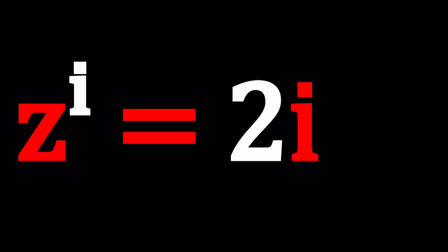So we have Z to the I equals 2I. How do we solve for Z? Easy. Just log both sides and divide by that, right? Well, it's not that straightforward. Maybe it is, but what is the log of 2I or LN of 2I? Natural log, right?